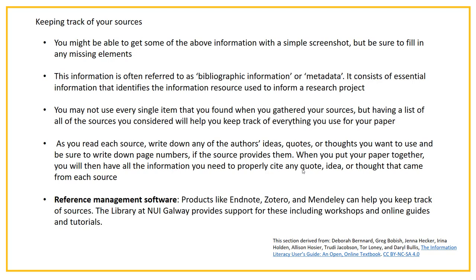Inevitably some of the sources you think you're going to use in your paper you'll find are actually extraneous, but it's still useful to have them on hand just in case. As you read each source, write down any of the author's ideas, quotes, or thoughts that you want to use, and be sure to write down the page numbers if the source provides them — particularly in cases of direct quotation, you're going to need those page numbers. When you put your paper together, you'll then have all the information you need to properly cite any quote, idea, or thought. Remember: even if it's not a direct quote, if it's an idea that comes from somewhere, you need to cite the source.